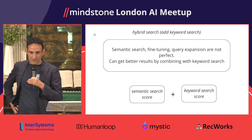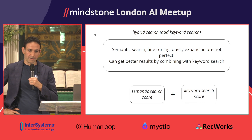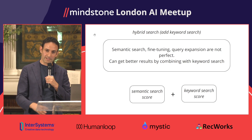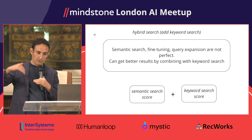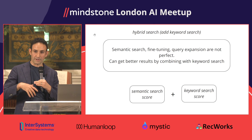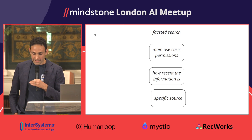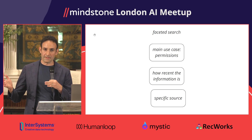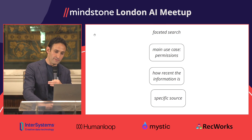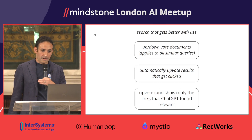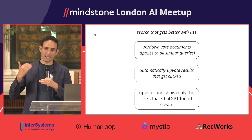We started by picking on keyword search, but actually keyword search is often pretty good. It's helpful to combine semantic search — possibly fine-tuned and query-expanded — with good old keyword search. The final score given to a document is a combination of the semantic search score and the keyword score. Faceted search refers to filtering: the main use case is permissions, but you can also filter by modification date, source, author, and so on.